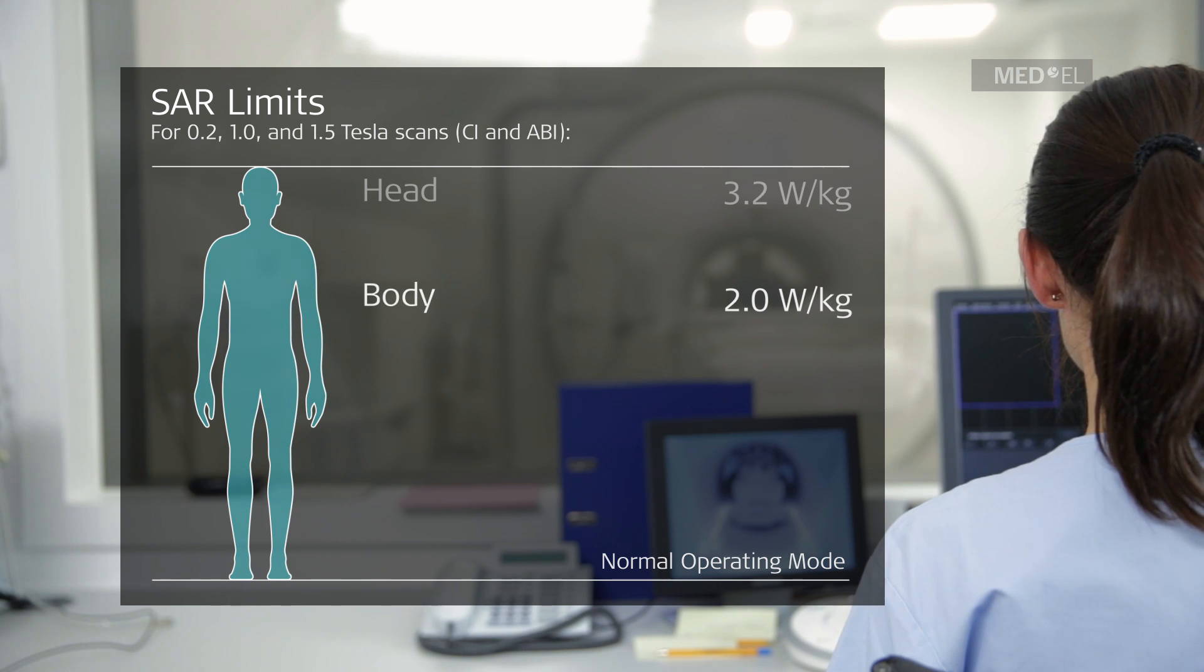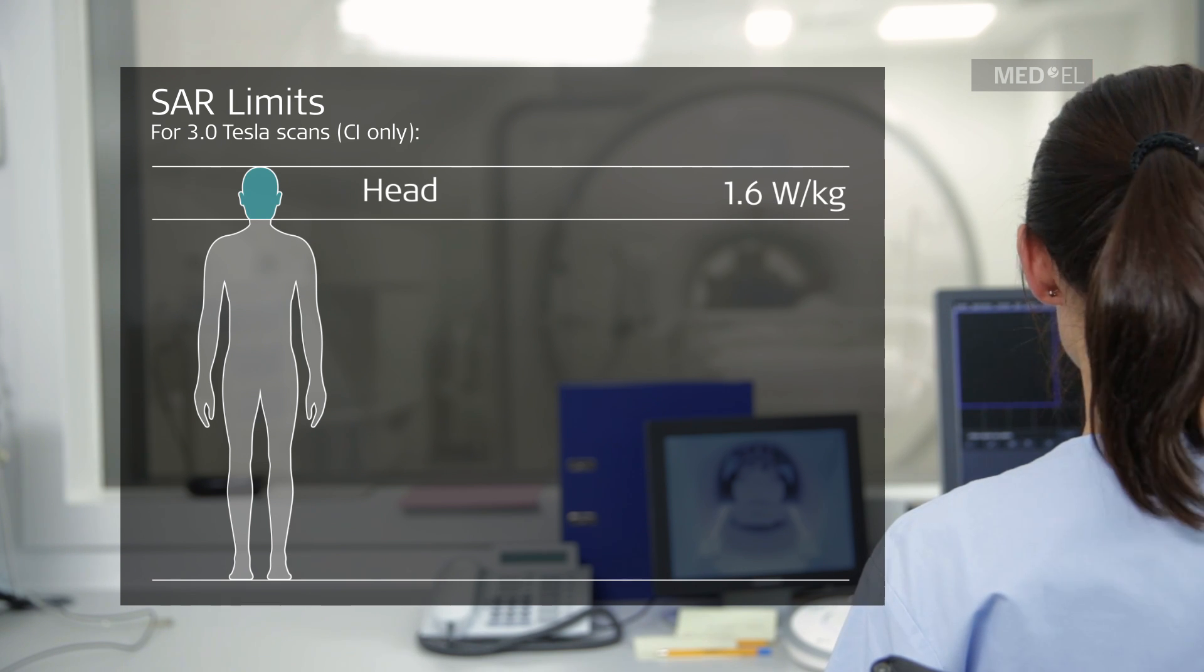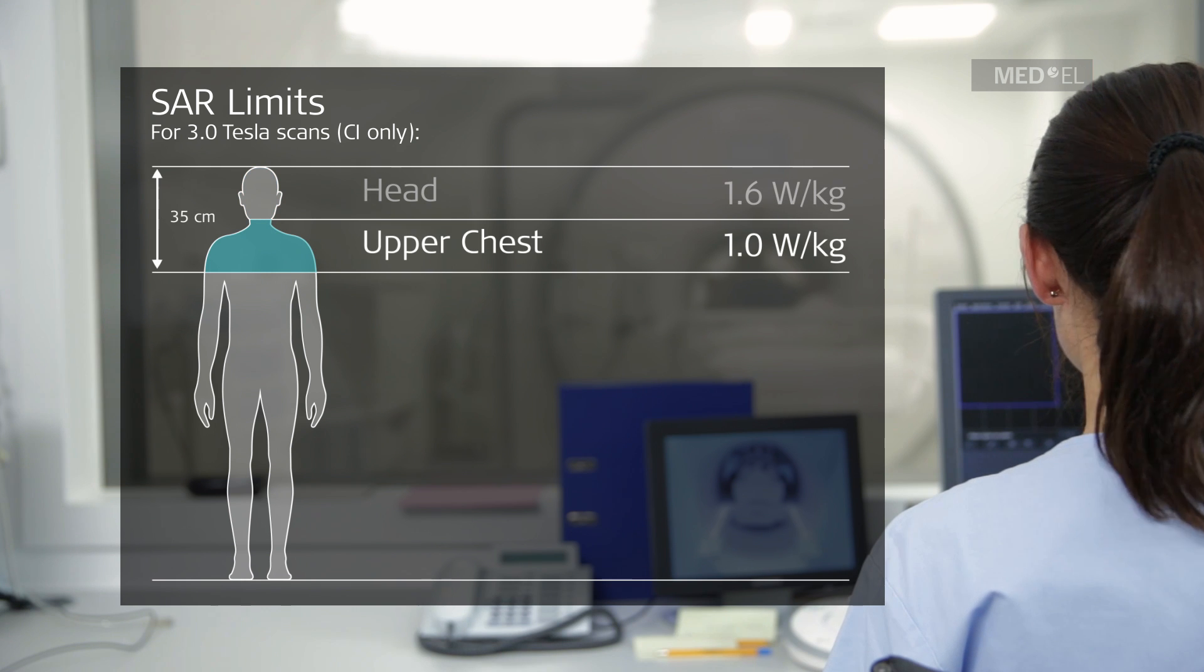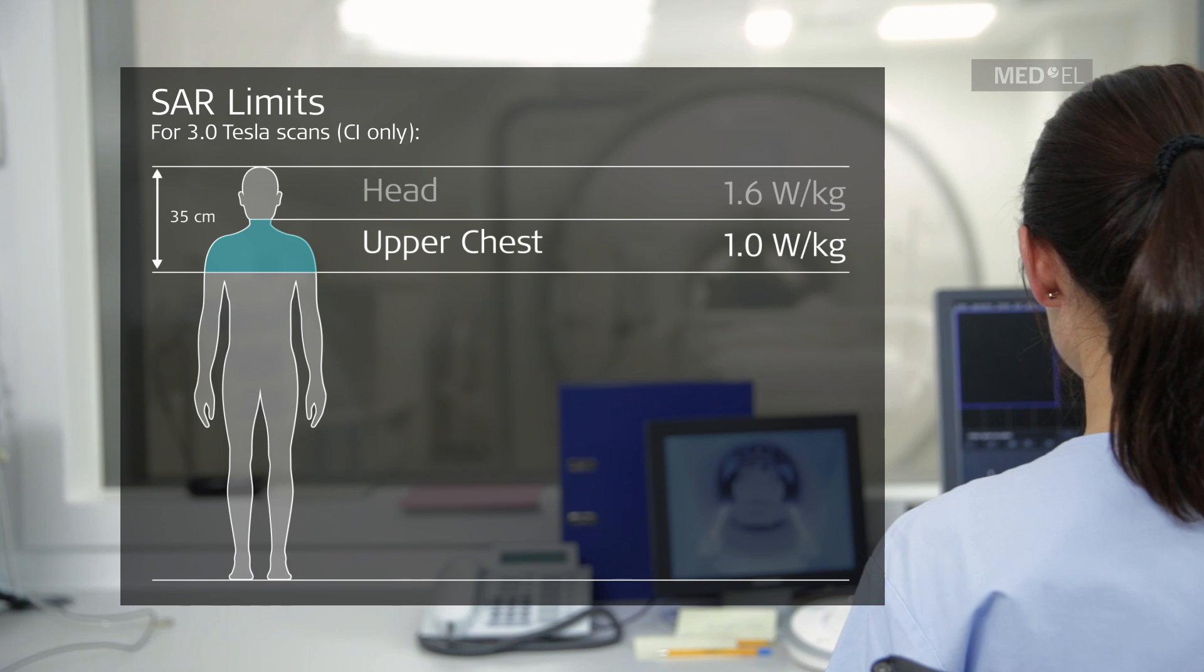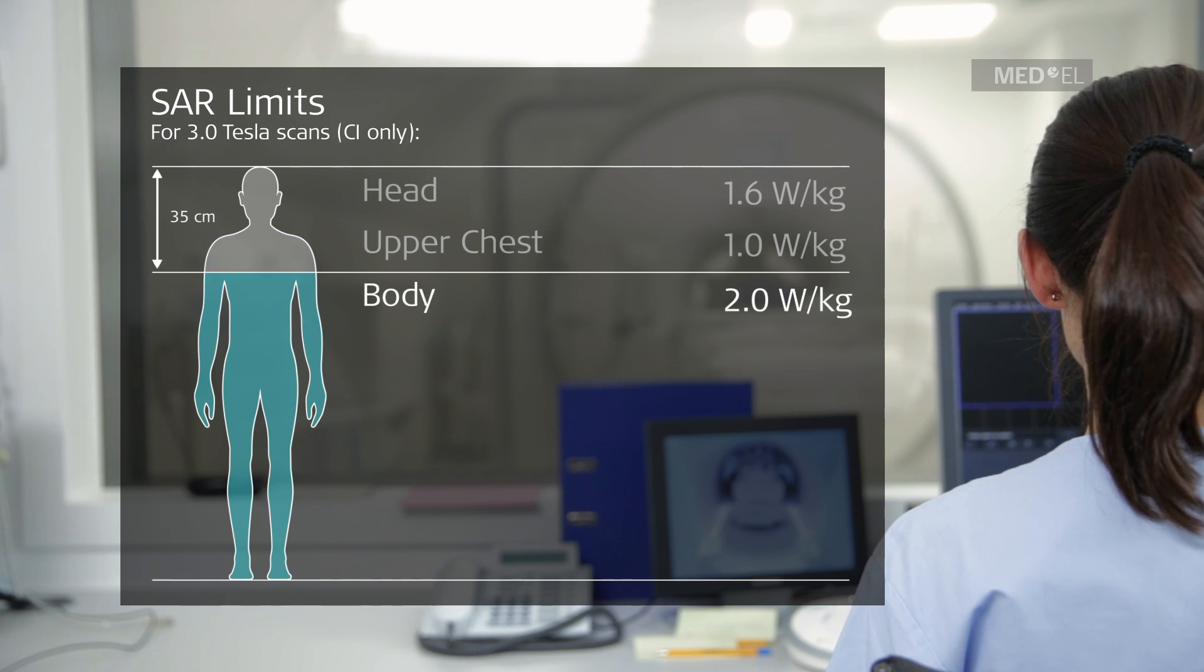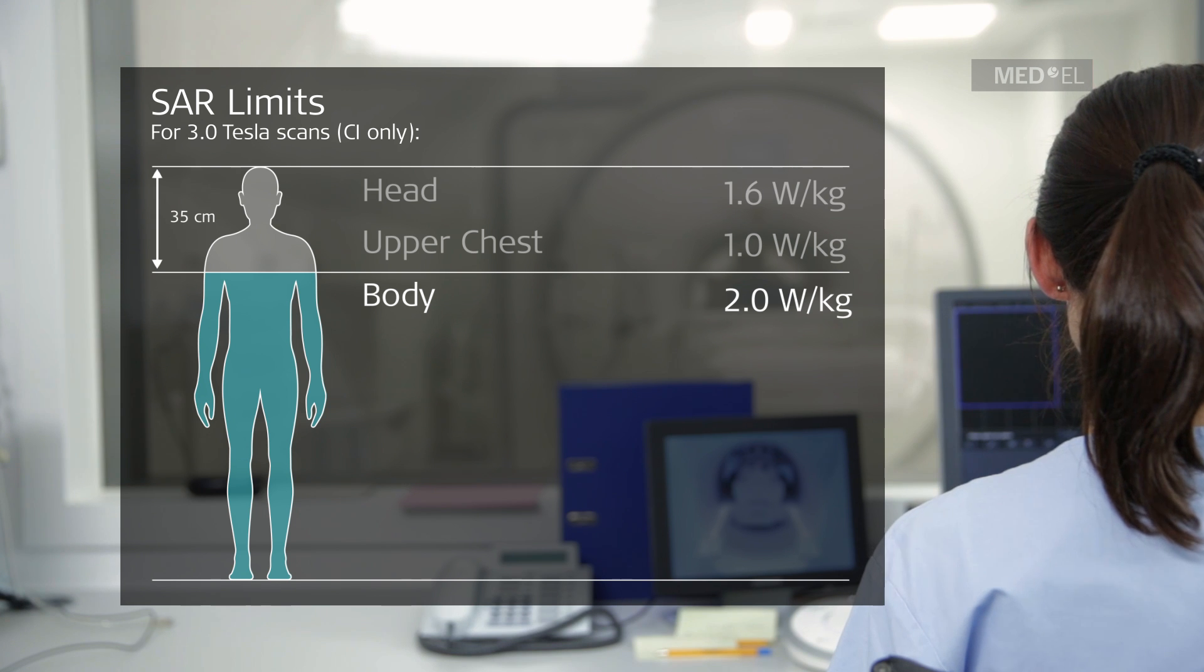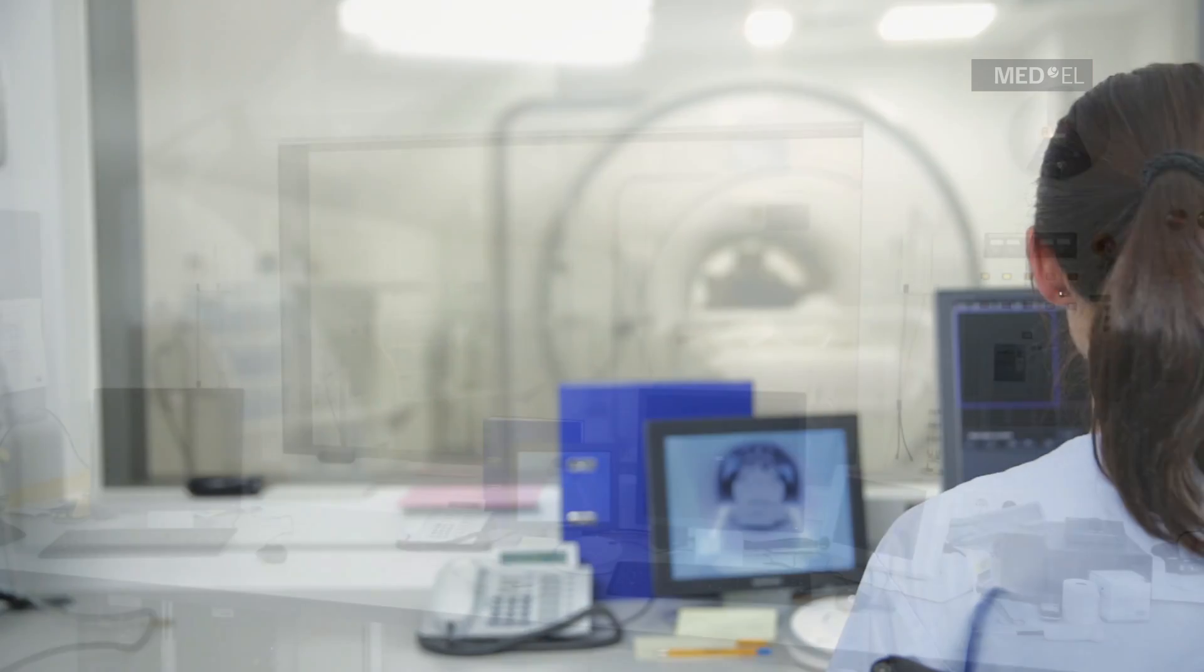For three Tesla scans with a synchrony cochlear implant, the SAR limit is 1.6 Watt per kilogram for the head. The whole body SAR limit is 1 Watt per kilogram for body regions less than 35 cm from top of the head and 2 Watt per kilogram for body regions more than 35 cm away from top of the head. Please note, the synchrony auditory brainstem implant is only approved for 0.2, 1, and 1.5 Tesla MRI.